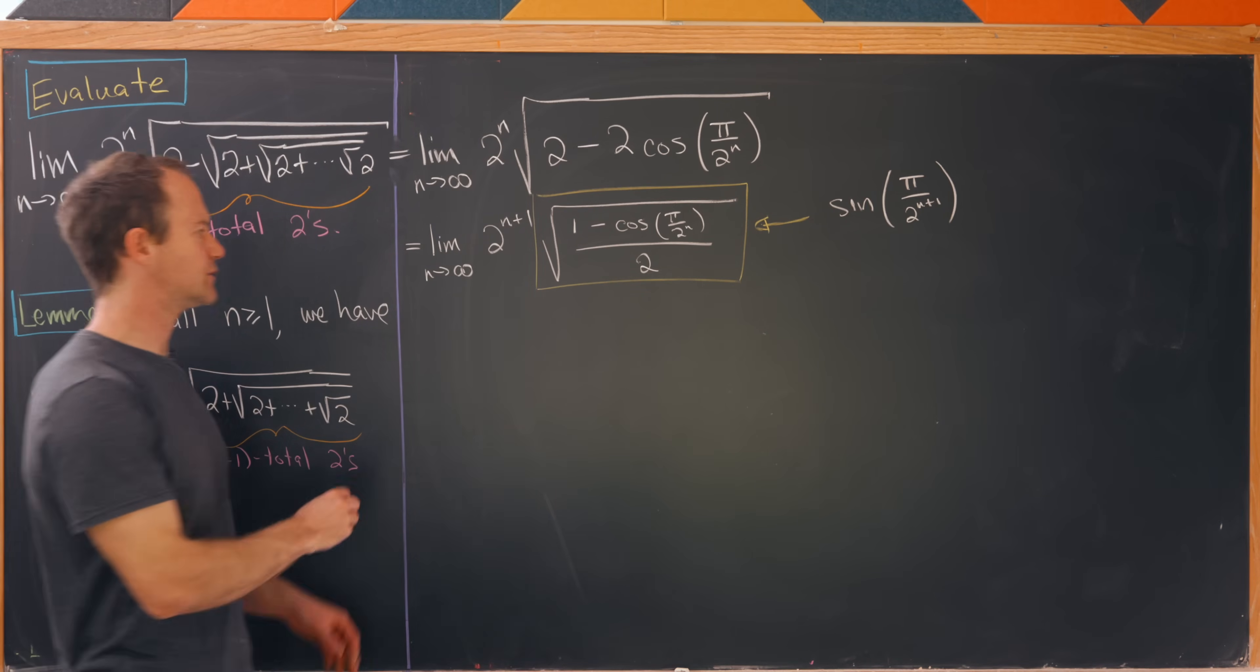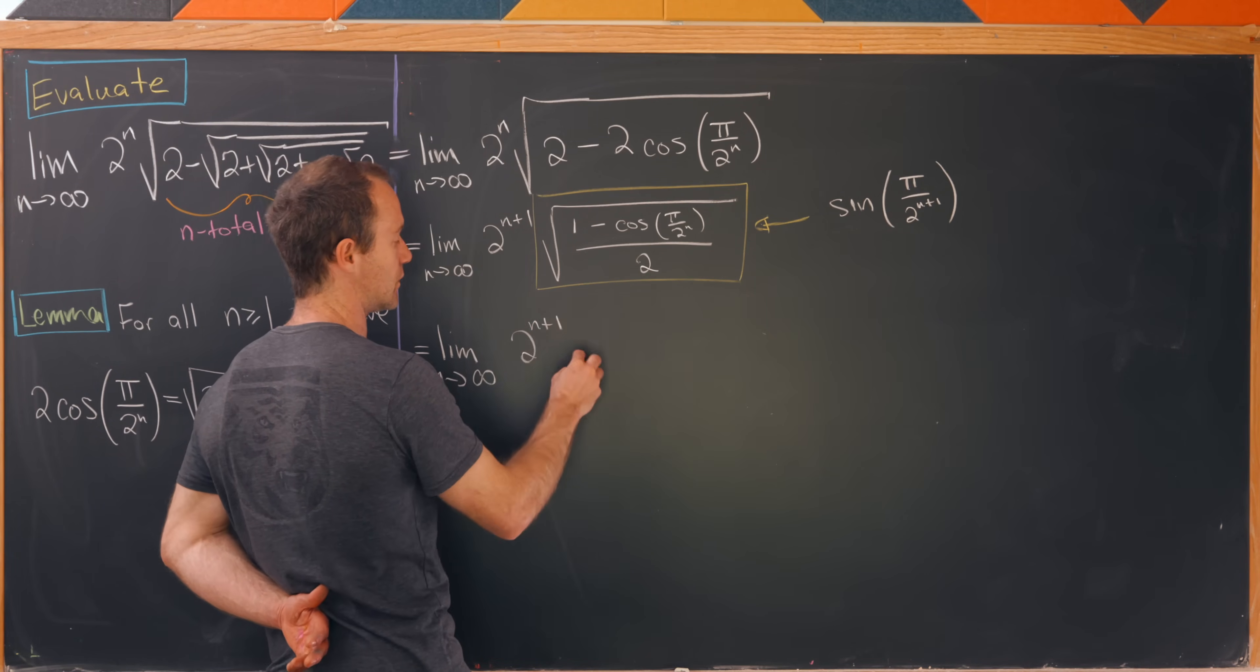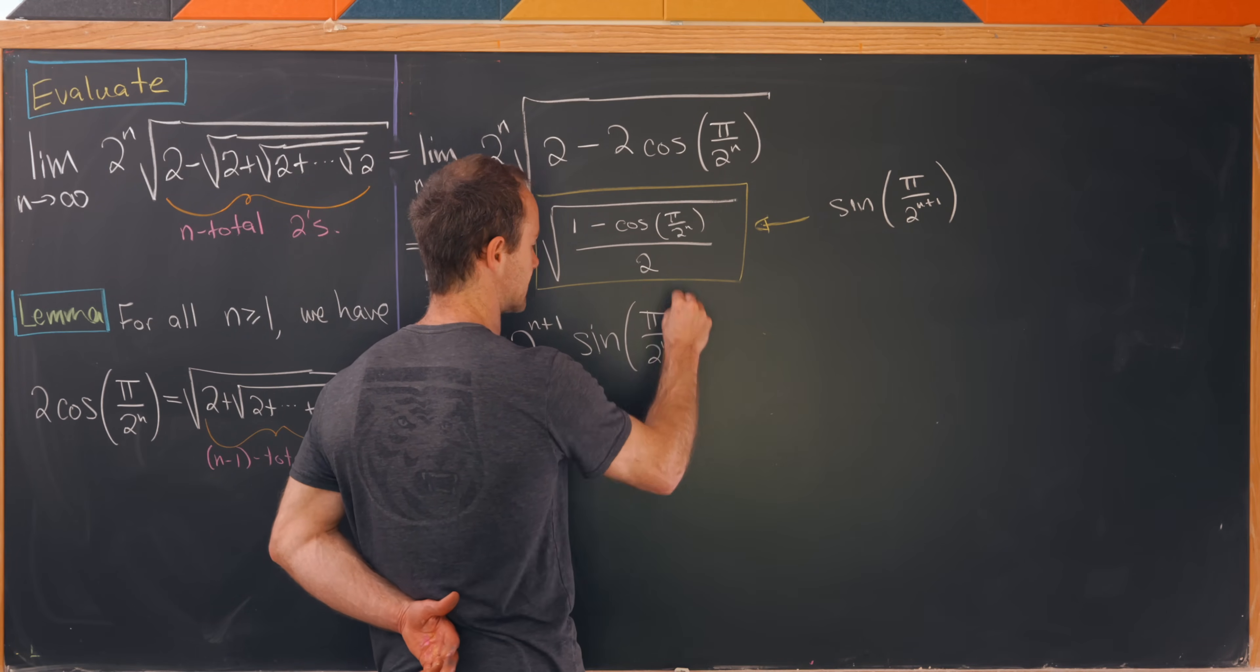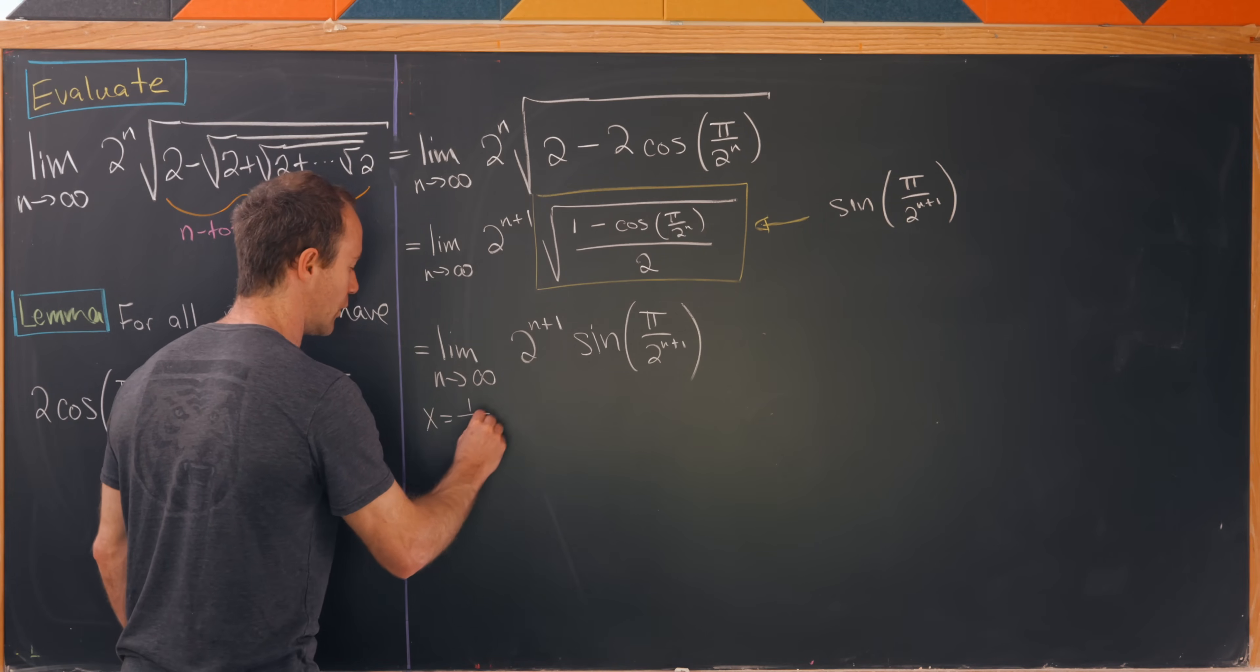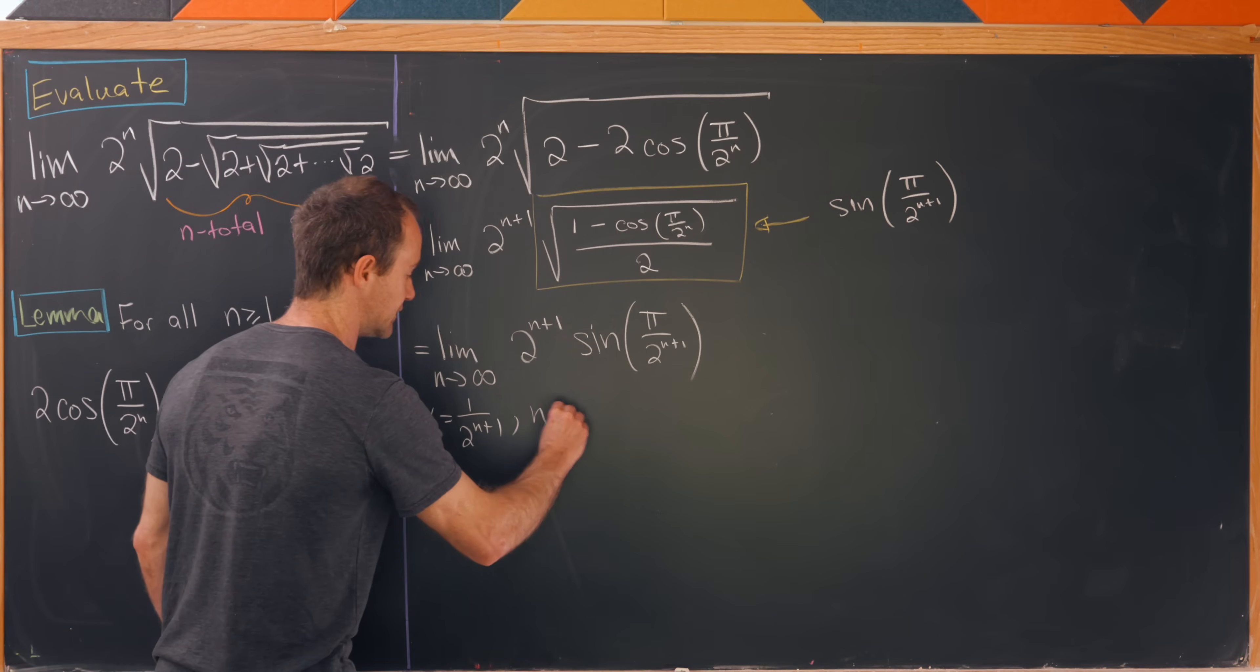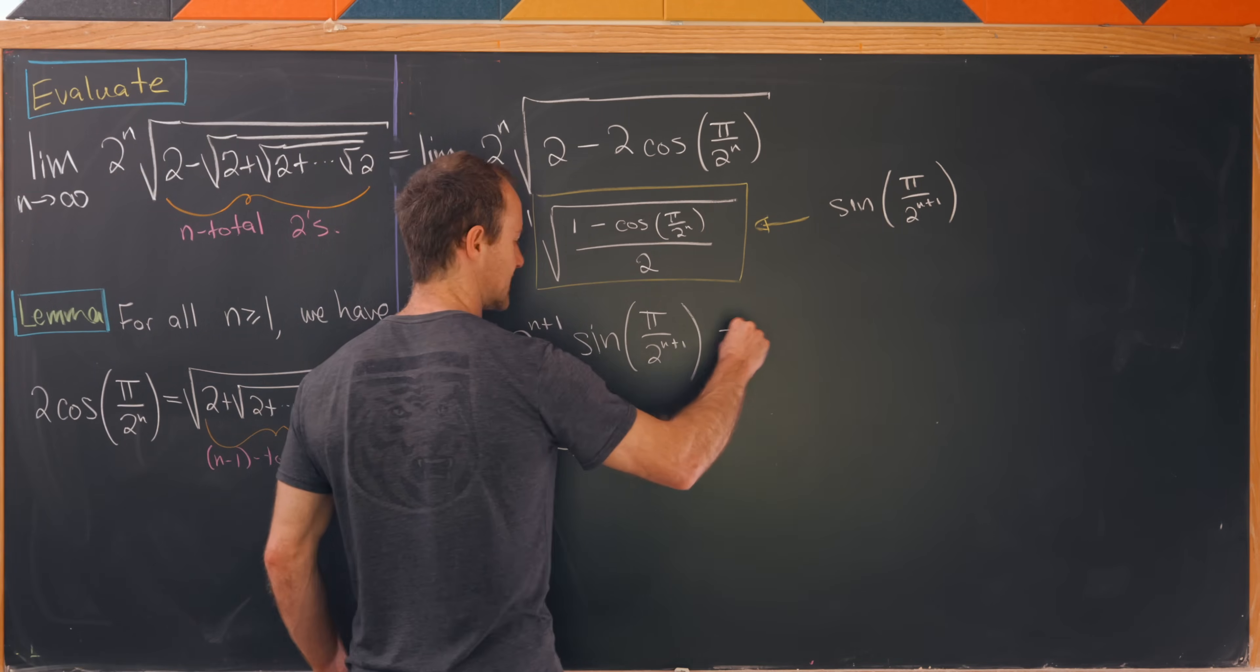That means we can make this simplification to the limit as n goes to infinity of 2 to the n plus 1 times sine of pi over 2 to the n plus 1. Now I'm actually going to make a change of variables here. Let's set x equal to 1 over 2 to the n plus 1. And let's notice as n goes to infinity we have x go to 0 from above.